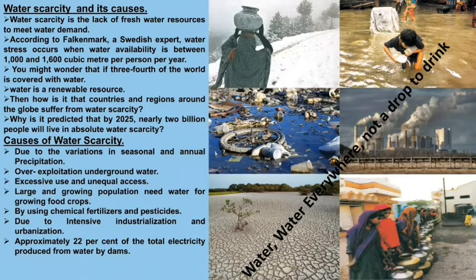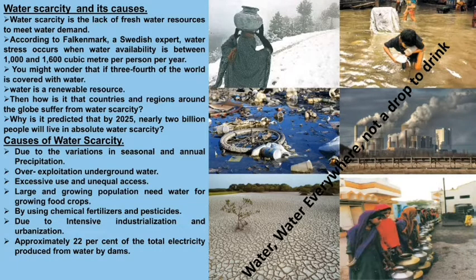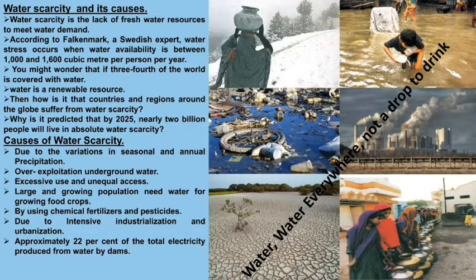Approximately 22% of electricity is generated from water by dams. Water stored by the construction of dams becomes stagnant over time and gets polluted, contributing to water scarcity.